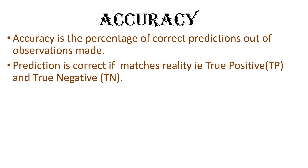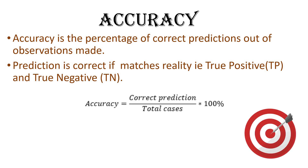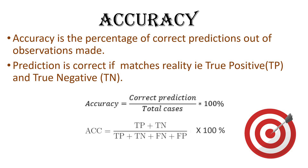The formula for accuracy is: True Positive plus True Negative, divided by total predictions, multiplied by 100. Correct predictions can be true positive and true negative — cases where prediction and reality match — divided by total cases, which includes true positive, true negative, false positive, and false negative.